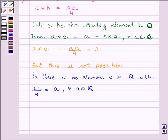As this is not possible, so we can write, there is no element E in Q with AE upon 4 equal to A for every A belonging to Q, where Q is the set of rational numbers. So, our final answer is, there is no identity element for binary operation star.